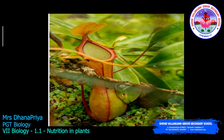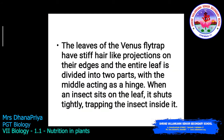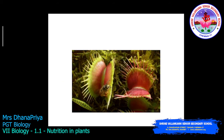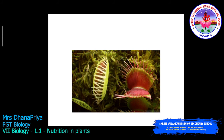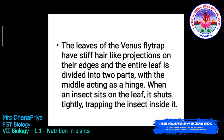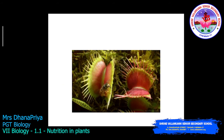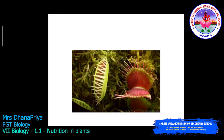Here you can see the diagrammatic view of the pitcher plant. The leaves of the Venus flytrap have stiff, hair-like projections on their edges, and the entire leaf is divided into two parts with the middle acting as a hinge. When an insect sits on the leaf, it shuts tightly and traps the insect inside. This is another example of an insectivorous plant — the Venus flytrap. Once the insect is trapped, the process of digestion takes over.